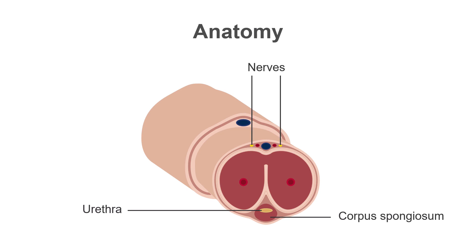There are two nerves on the dorsum of the penis that innervate it. The location of these is important for performing a dorsal nerve penile block.